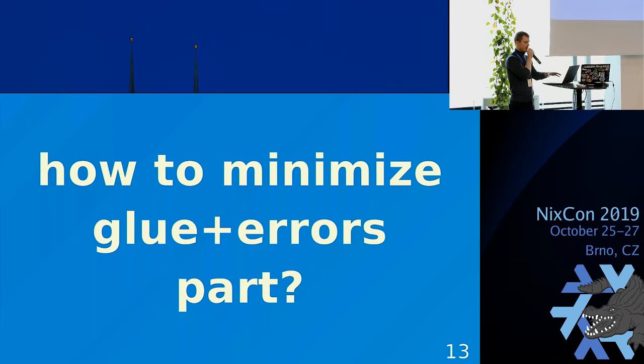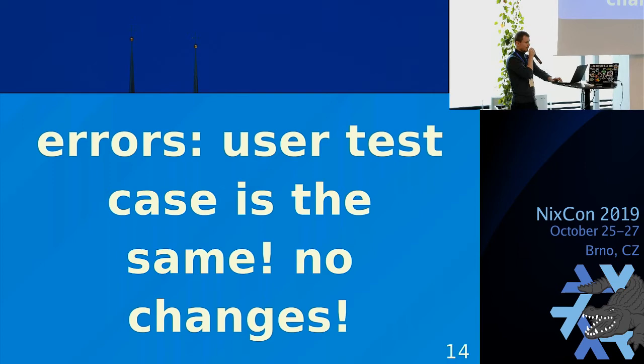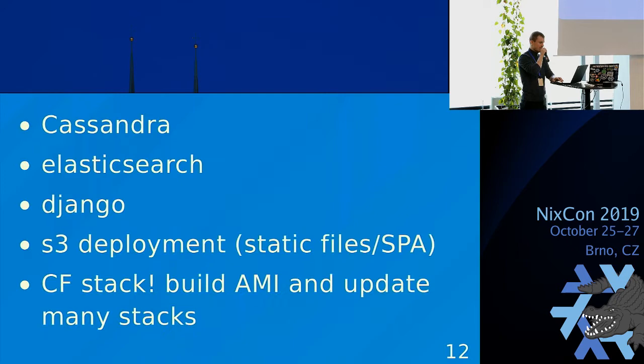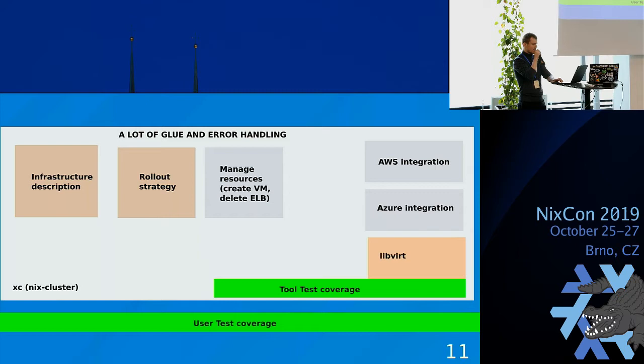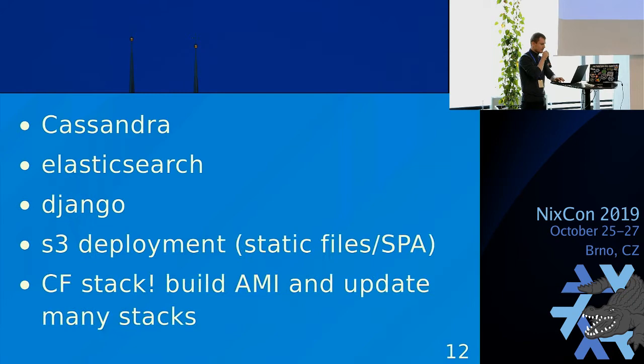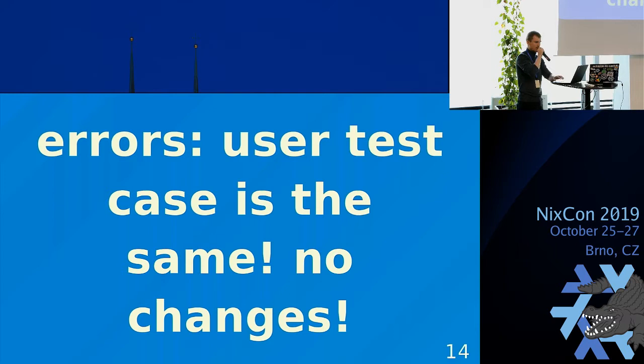If we have those libraries, then we have a lot of glue on our side for error handling and logic. How can we make it more efficient? The error side is simpler. As you can see, in both cases the user test coverage is the same — I have the input and what is the output: is the rollout done completely well. So the error is fine, we write our test case for that, and if we want to switch from that tool, it's already done.